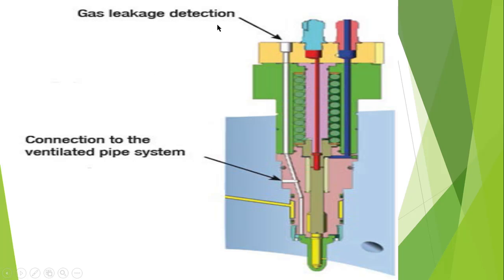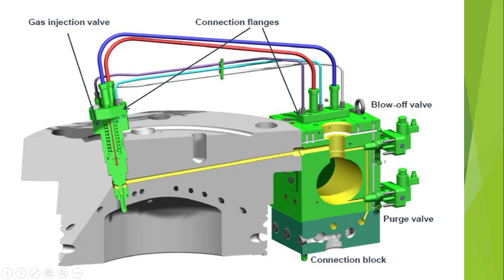The second question often asked is about gas leak detection — why it is provided. It is provided so that when there is no injection taking place and if the gas is still leaking, it will be detected, an alarm will be sounded, and the whole system will be isolated. The blue one is hydraulic oil, the red one is sealing oil, this is the drain, and the white one is gas detection. The gas waiting here is at a pressure of around 225 to 275 bar, and when lifted it finds its way to the combustion space.